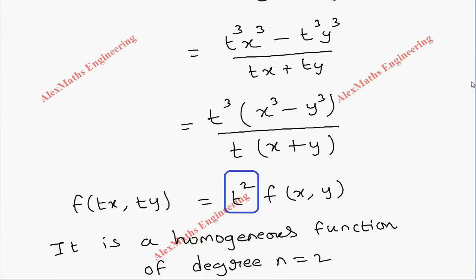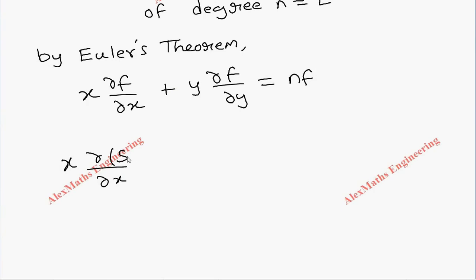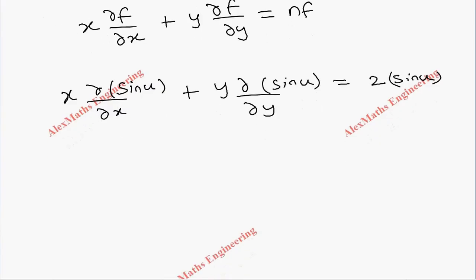Here in place of f let's substitute sin u: x∂(sin u)/∂x + y∂(sin u)/∂y = 2 sin u. Now let's start the differentiation of sin u with respect to x.